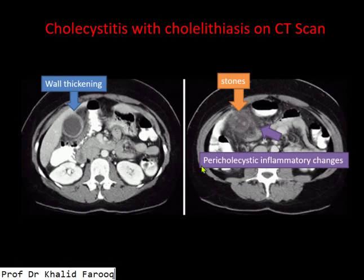Another example here: we see diffuse wall thickening of the gallbladder while inflammatory changes are noted in the pericholecystic space. Here we have multiple calculi in the fundal region of the gallbladder, so we will say that this is an example of cholelithiasis with cholecystitis.